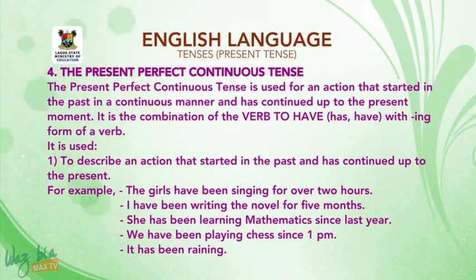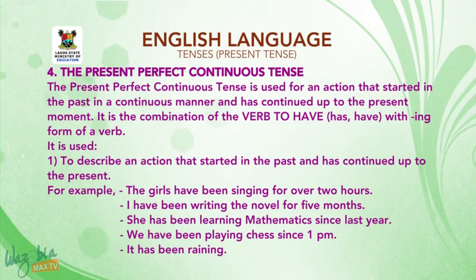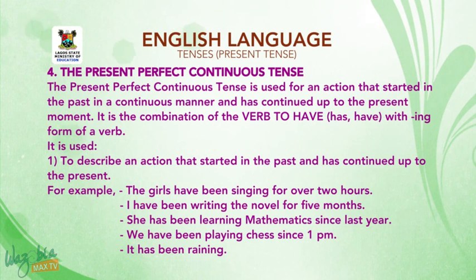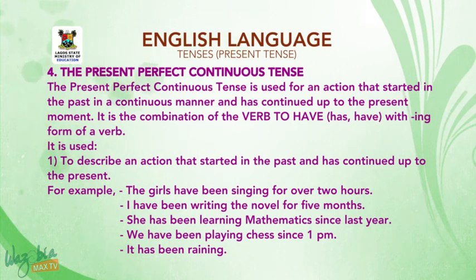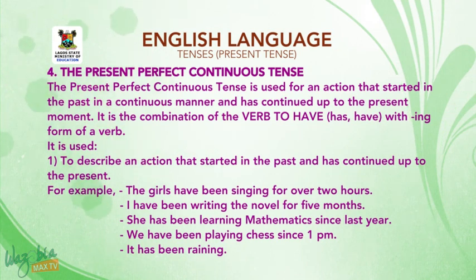Uses of the present perfect continuous tense: To describe an action that started in the past and has continued up to the present. For example: The girls have been singing for over 2 hours. I have been writing the novel for 5 months. She has been learning mathematics since last year. We have been playing chess since 1 p.m. It has been raining. All these examples show that the actions started in the past and are still ongoing.